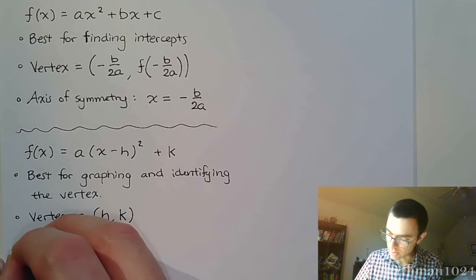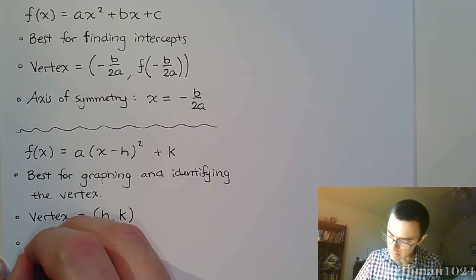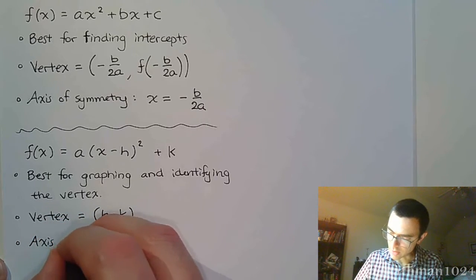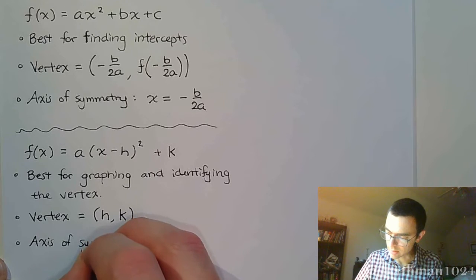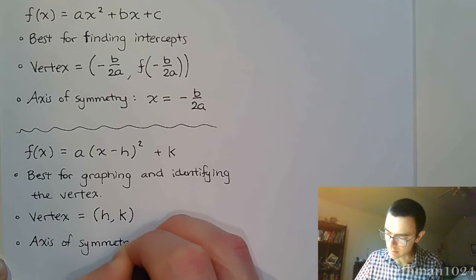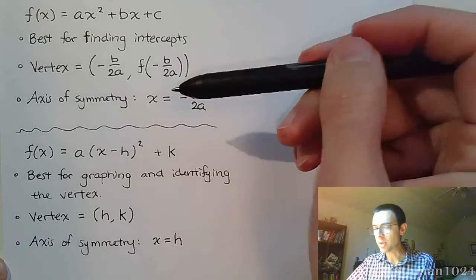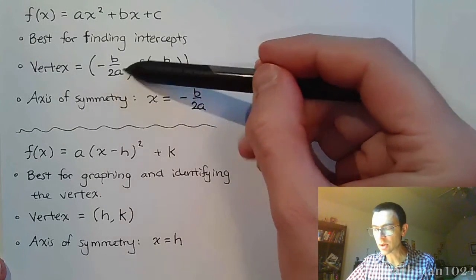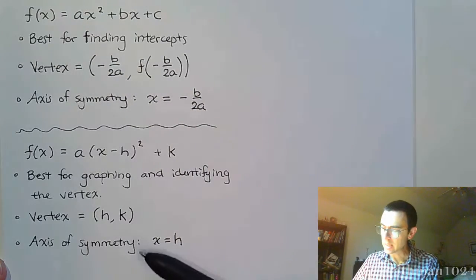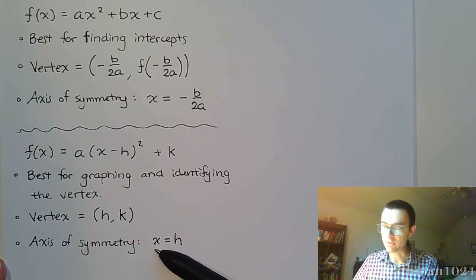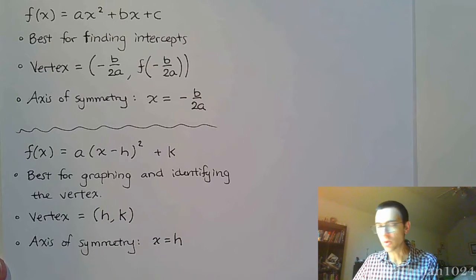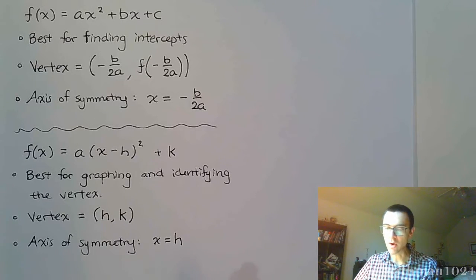Which then means that your axis of symmetry is x is equal to h. In the same way up here, the x was equal to the x coordinate of the vertex, the axis of symmetry in the vertex form is going to equal the x coordinate for the vertex. So it still holds up.